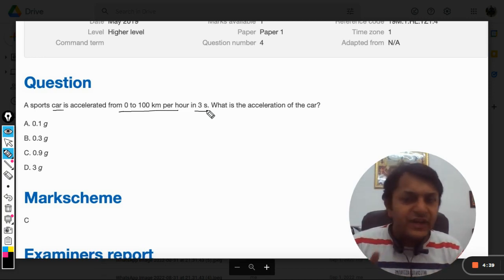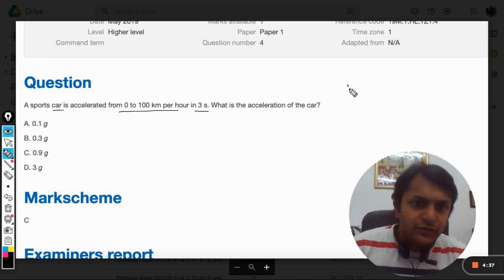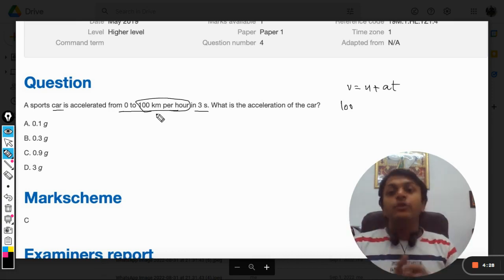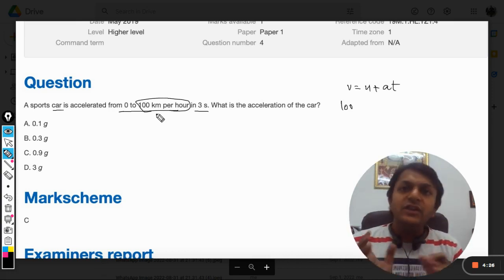Now on the surface, the question seems to be very easy because v is equal to u plus at, simple. The velocity is 100 kilometers per hour. Now the very important point to be noted here is that we need to convert it into SI units.